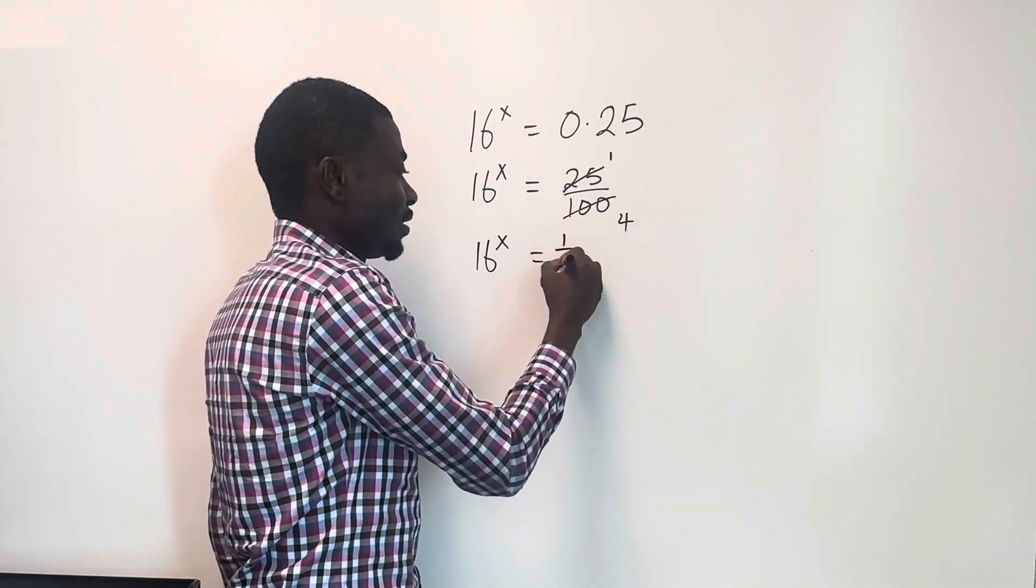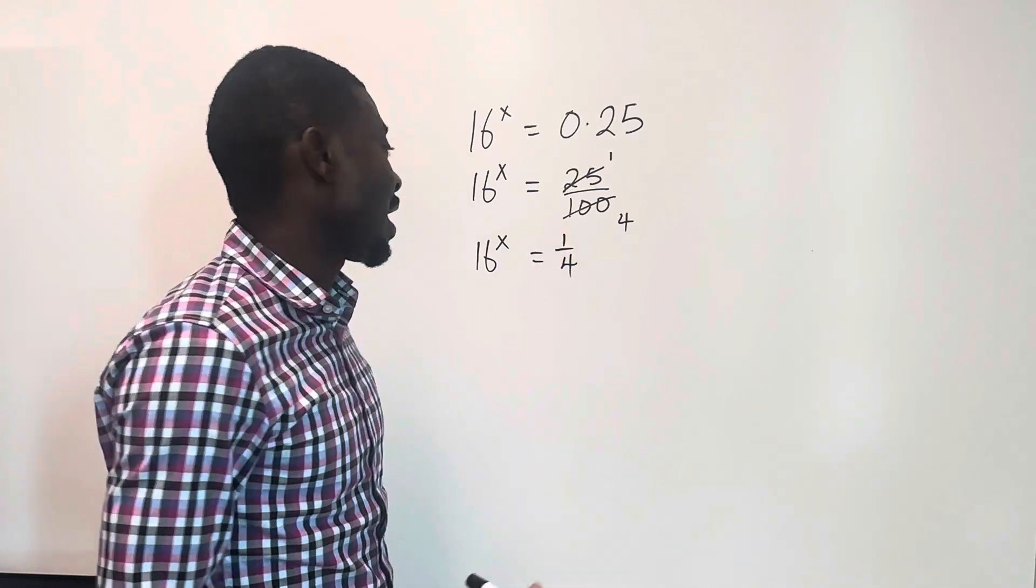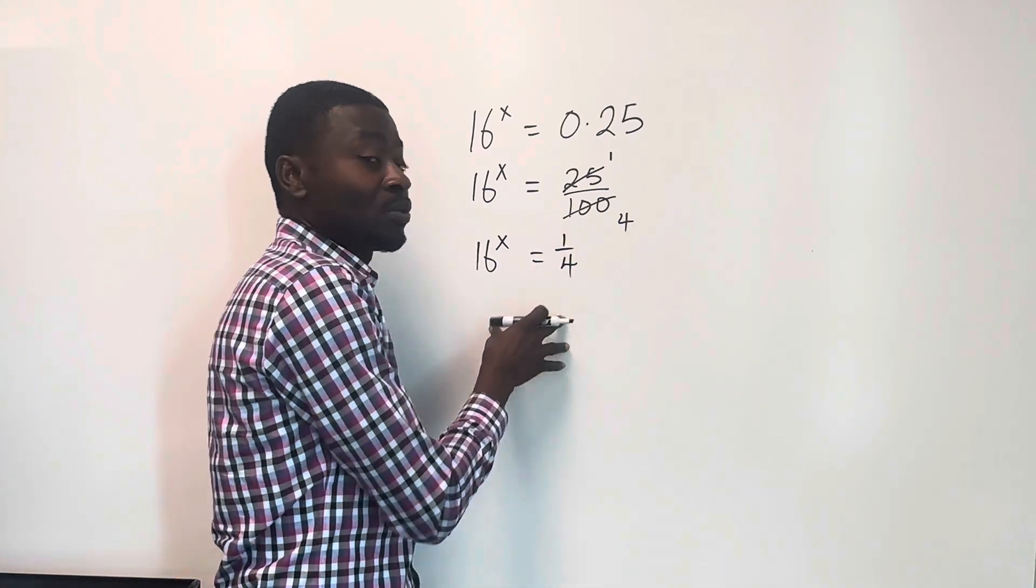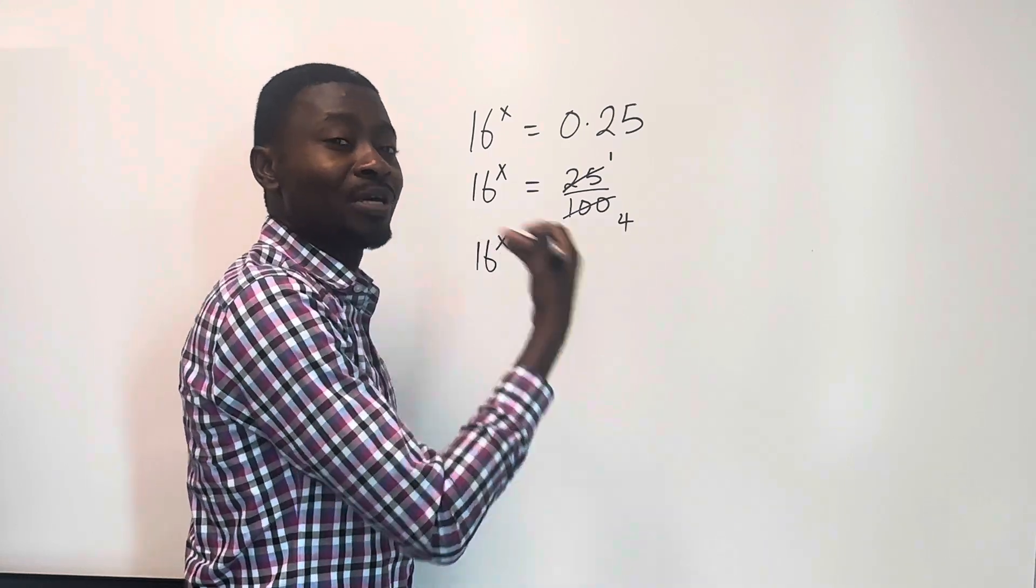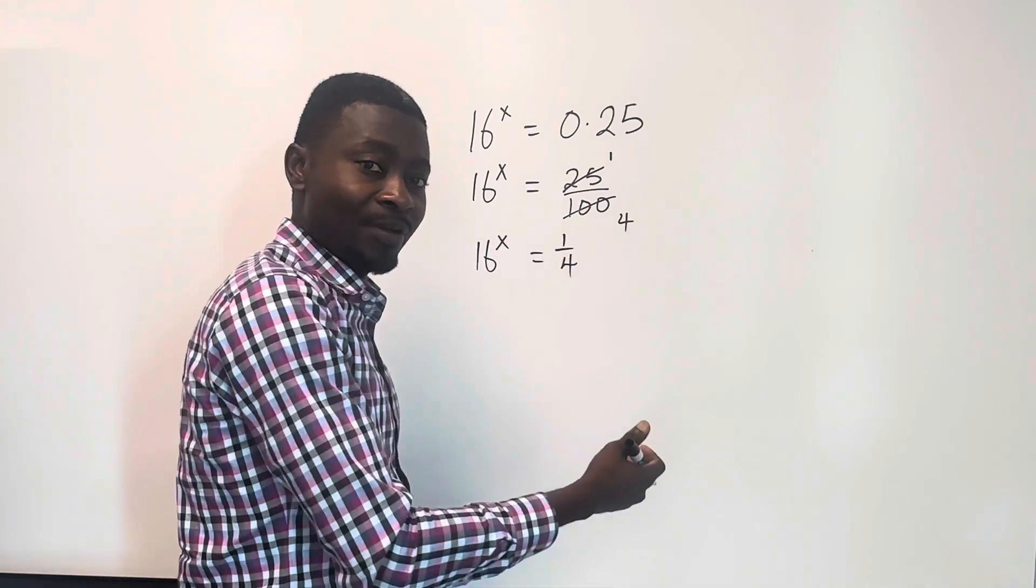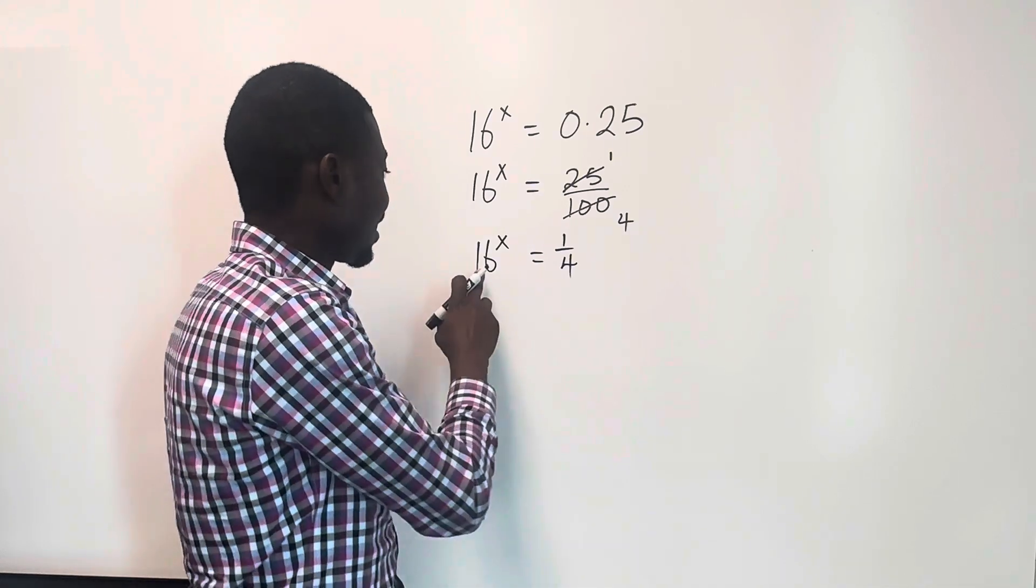So what do you have here? You repeat this over 4. Now, remember, our objective in this question is to make the base of the right-hand side to be the same with the base of the left-hand side. So that is exactly what we're going to do here.